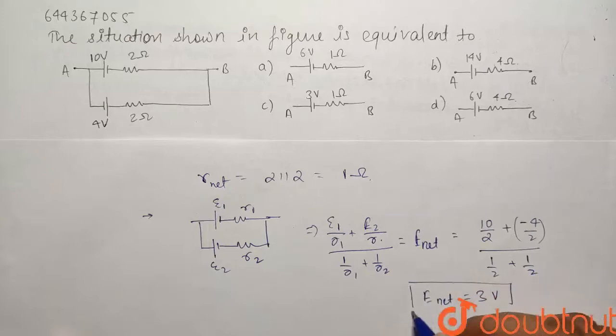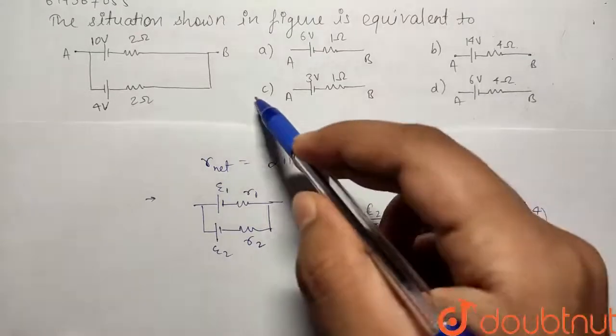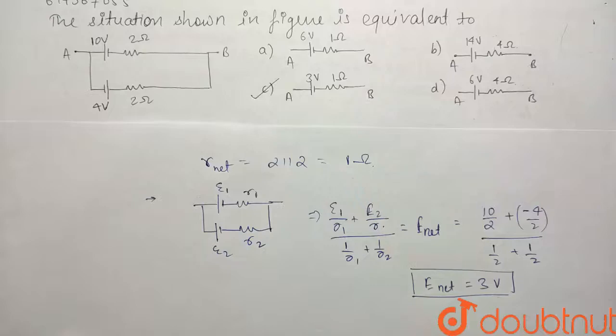So the net potential across the single element circuit will be 3 volts and the net resistance will be 1 ohm. So from the given options, our option C has to be the correct answer. Thank you.